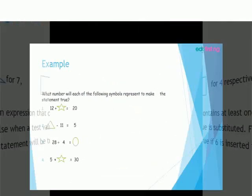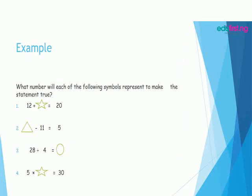What number will each of the following symbols represent to make the statement true? 12 plus star equal to 20, triangle minus 11 equal to 5, 28 divided by 4 equal to circle, 5 times star equal to 30.